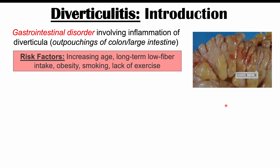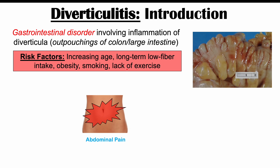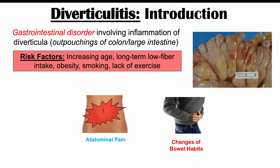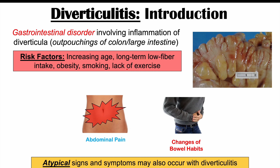Some of the risk factors for getting diverticulitis include increasing age, long-term low fiber intake, obesity, smoking, and lack of exercise. Some of the classic signs and symptoms include abdominal pain and changes in bowel habits — more specifically, patients will often have diarrhea. But there are many other weird or atypical signs and symptoms, which we're going to talk about in the upcoming slides.